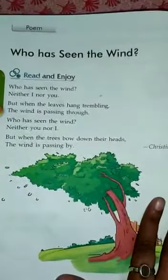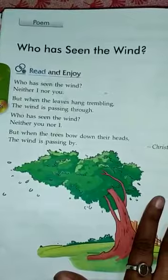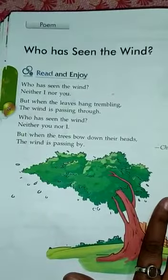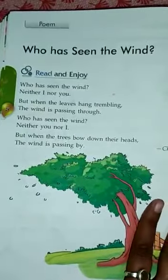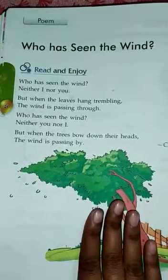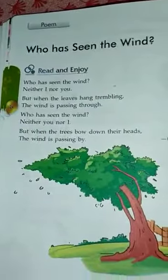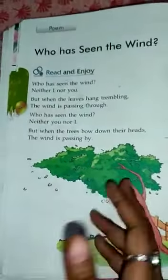Dekhen, iska matlab hai — hawa humein dikhti nahi hai, theek hai? Na kisi ko bhi nahi dikhti hawa. But phir bhi humein pata chalta hai ki hawa chal rahi hai. (See, the meaning is — wind is not visible to us; no one can see the wind. But still we know that the wind is blowing.)